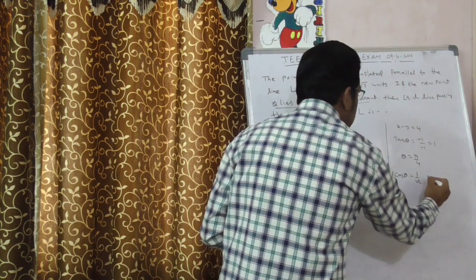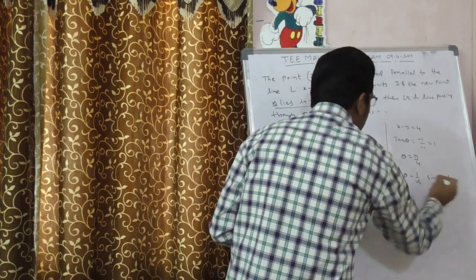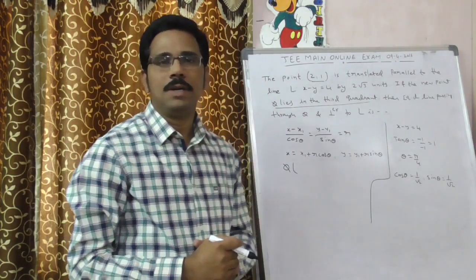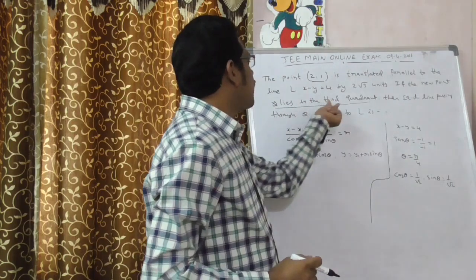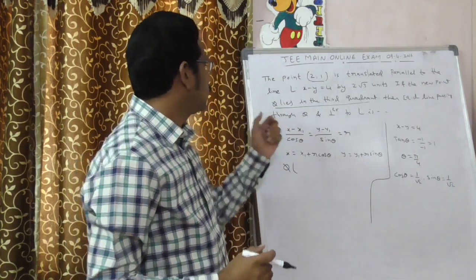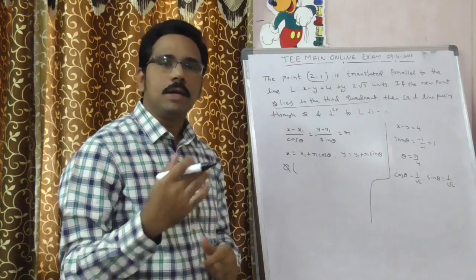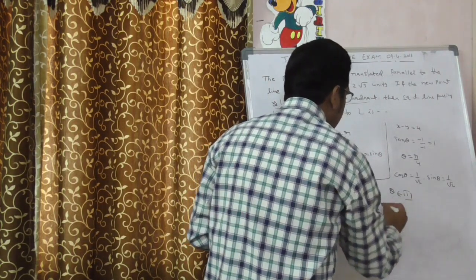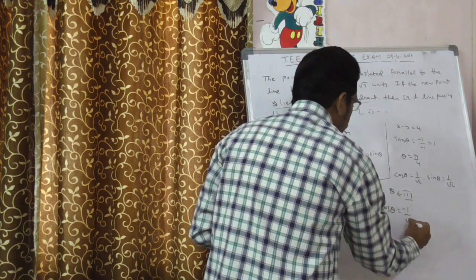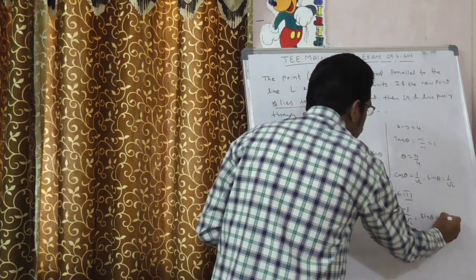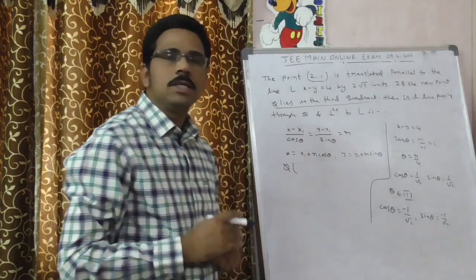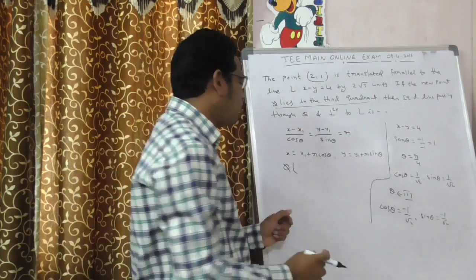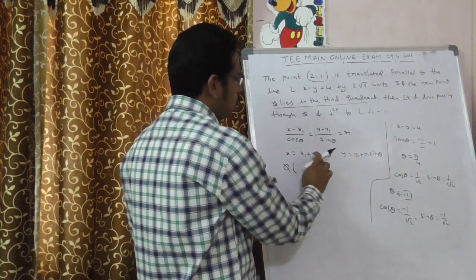If theta is equal to pi by 4, what is cos theta? Cos theta is equal to 1 by root 2, sin theta is equal to 1 by root 2. We got sin pi by 4 and cos pi by 4 values as 1 by root 2. Now here, theta lies in third quadrant according to the given concept. Where is q? q is in third quadrant. Therefore, take theta in third quadrant. If theta is in third quadrant, cos theta is minus 1 by root 2 and sin theta is equal to minus 1 by root 2. Why? Because in third quadrant, both cos and sin are negative.